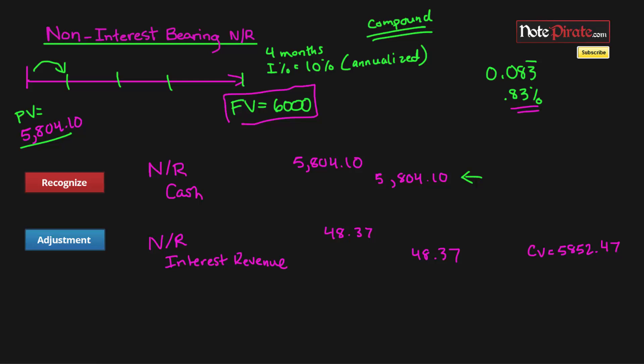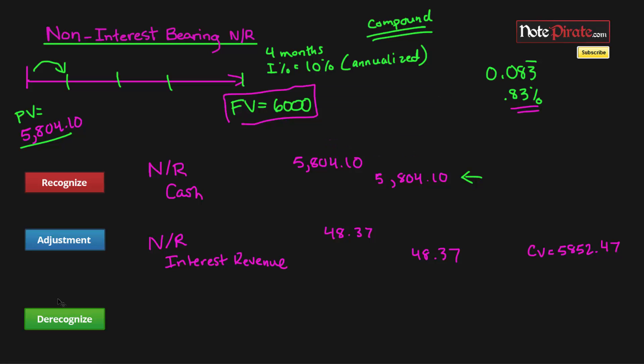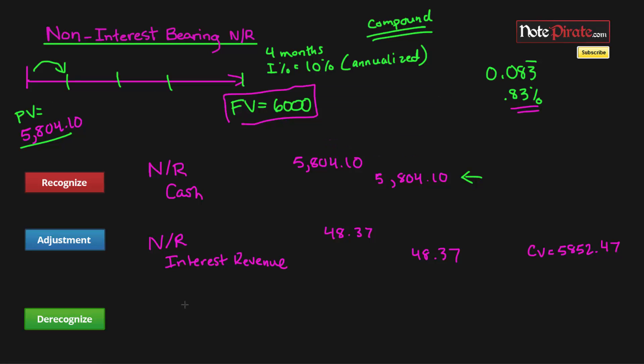Now at the end of the term, it's going to be worth $6,000 because the discount will be amortized and we'll have a note that is worth $6,000. So to derecognize the note, we're just going to take the account note receivable and we're going to credit it since we're getting rid of that asset. And in return, we're receiving our initial investment back, which is the $6,000 of cash. Well, our initial investment plus the interest that is owed to us.